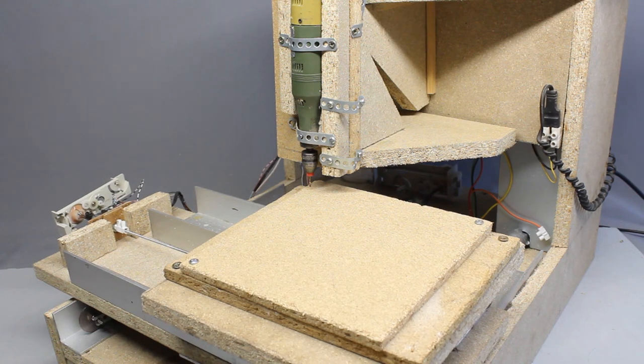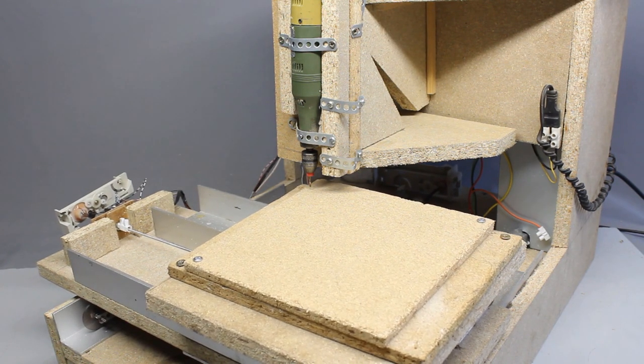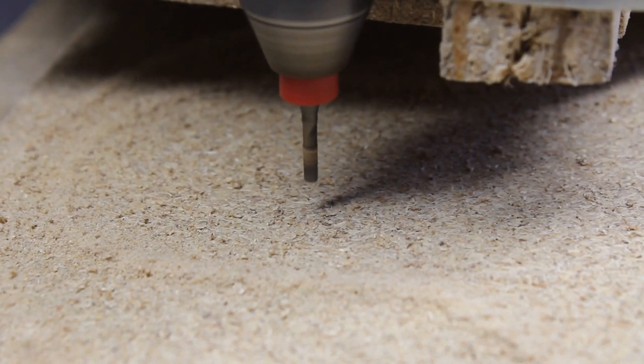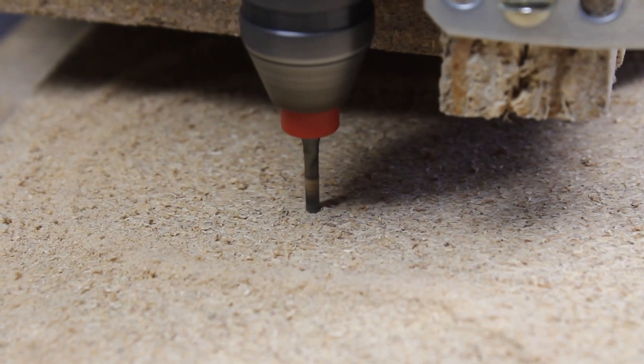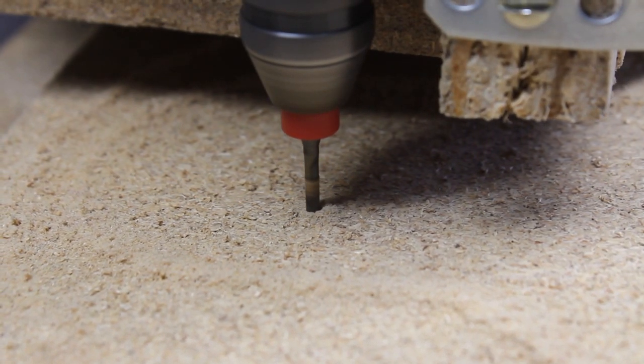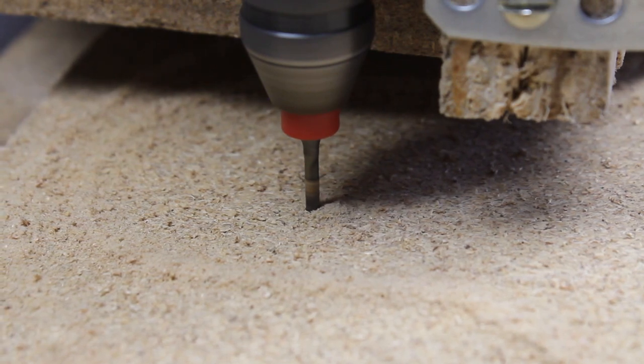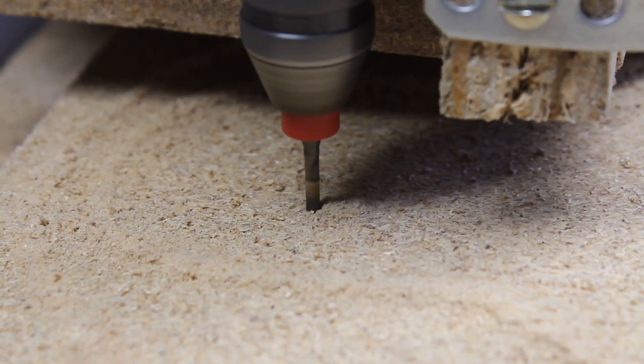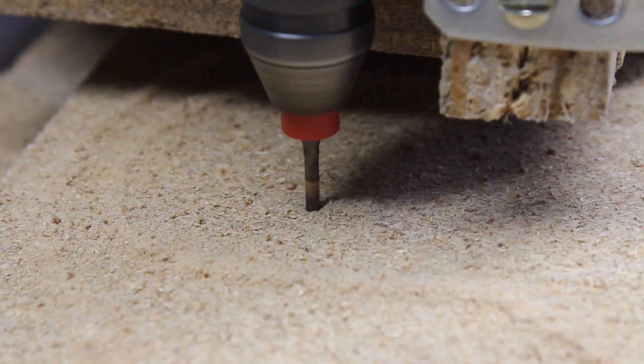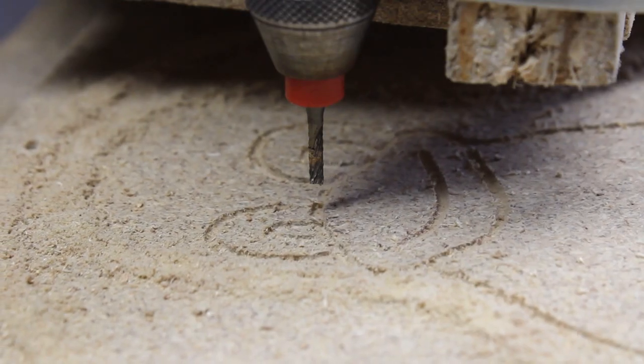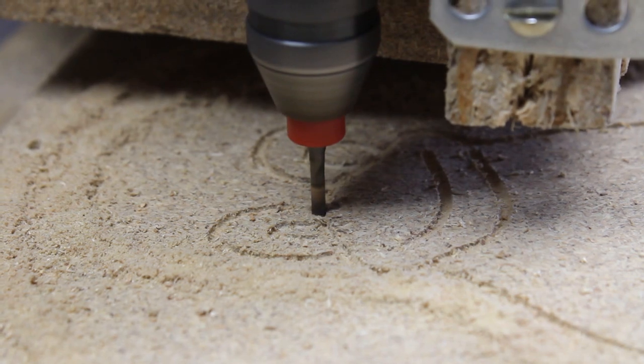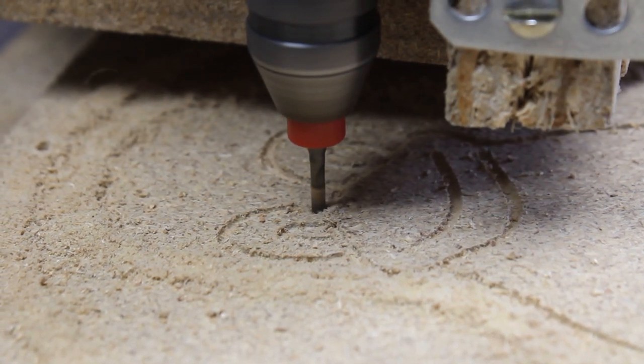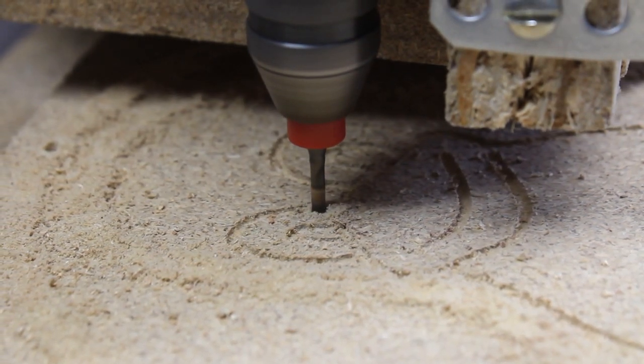Ten millimeters chipboard is engraved next. In the first run, the router is diving just slightly into the material. The chipboard is never that flat and the drill might break if it goes too deep into the wood while moving along the path.